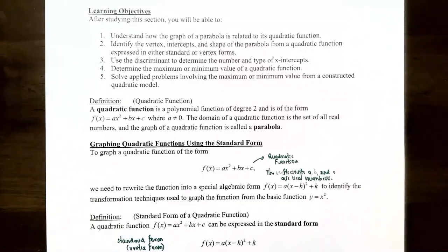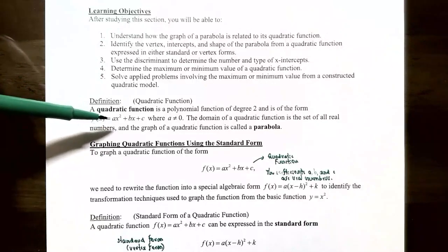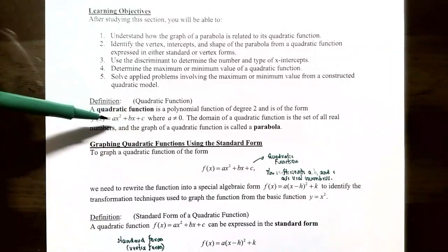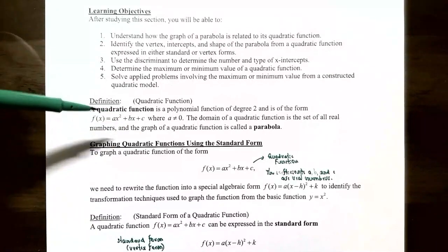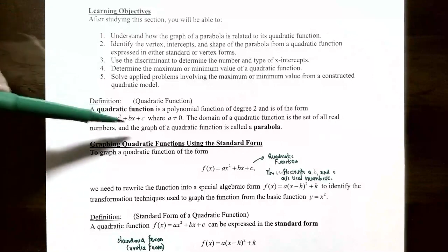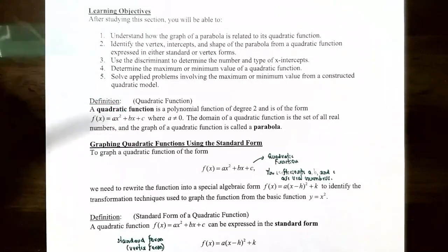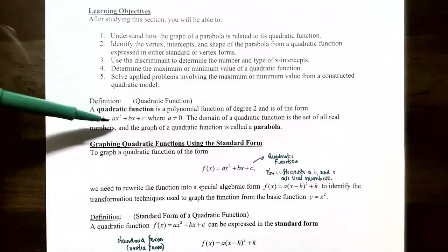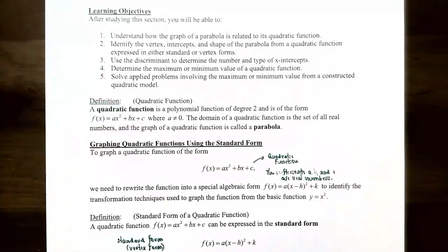A quadratic function is a degree-2 polynomial function of the form f(x) = ax² + bx + c, where a, b, and c are real numbers. Here a is the coefficient of x², b is the coefficient of x, and c is the constant term. Note that a cannot equal 0, otherwise it reduces to a linear function. The domain is all real numbers, since you never divide by zero or take an even root of a negative number.